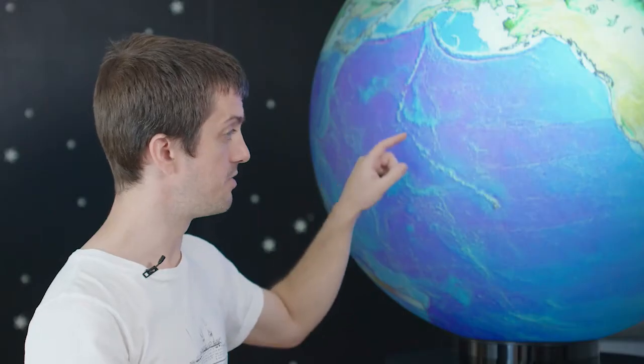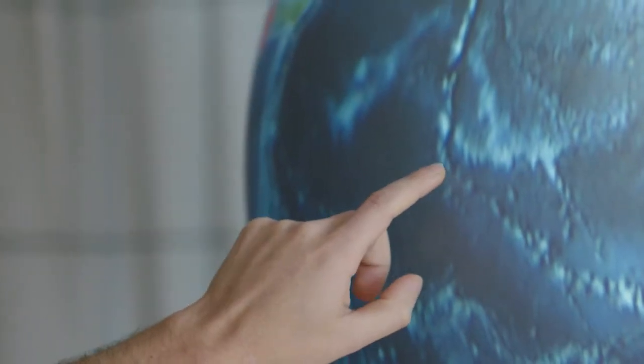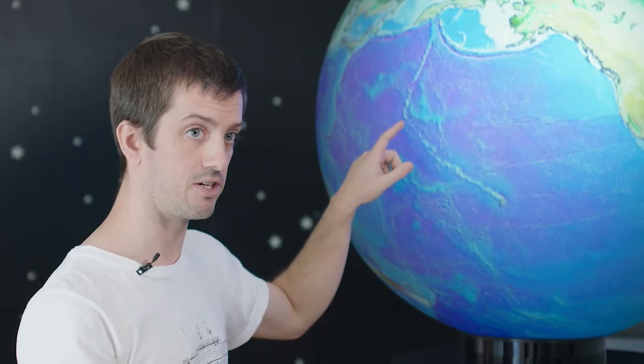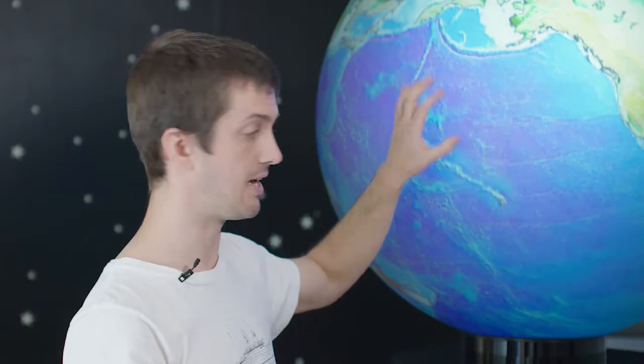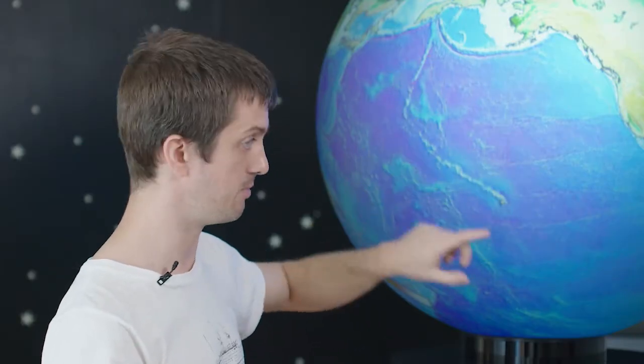And you can see that there is a bend here and the reason for this bend is very controversial. People have been working on trying to figure out why the Pacific plate seems to have changed direction as it was passing over this mantle plume, this hot spot.